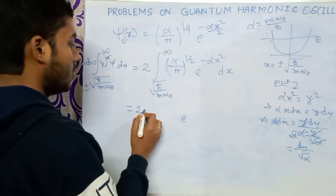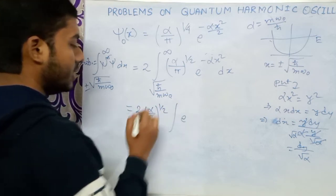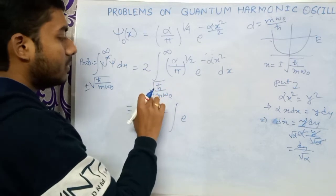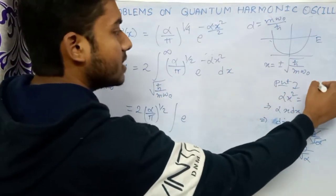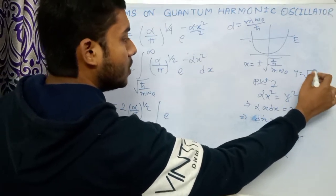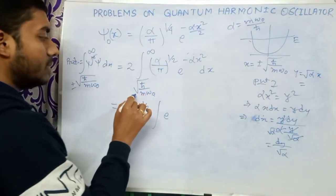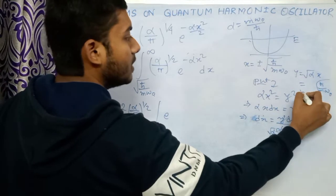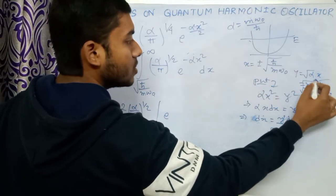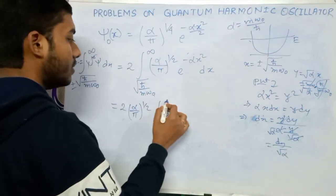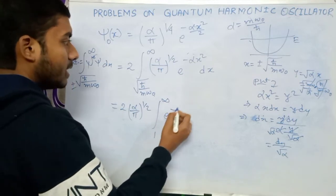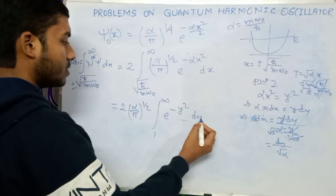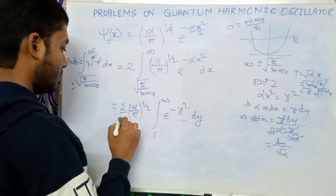Substituting, the expression becomes 2 times (alpha/pi)^(1/2) times the integral, with the infinity limit unchanged. For the lower limit, when x = sqrt(h-bar / m omega), we get y = sqrt(alpha) · x = sqrt(m omega / h-bar) · sqrt(h-bar / m omega) = 1. The sqrt(alpha) factors cancel, leaving the lower limit as 1 and the integral becomes (2/sqrt(pi)) times the integral from 1 to infinity of e^(-y²) dy.